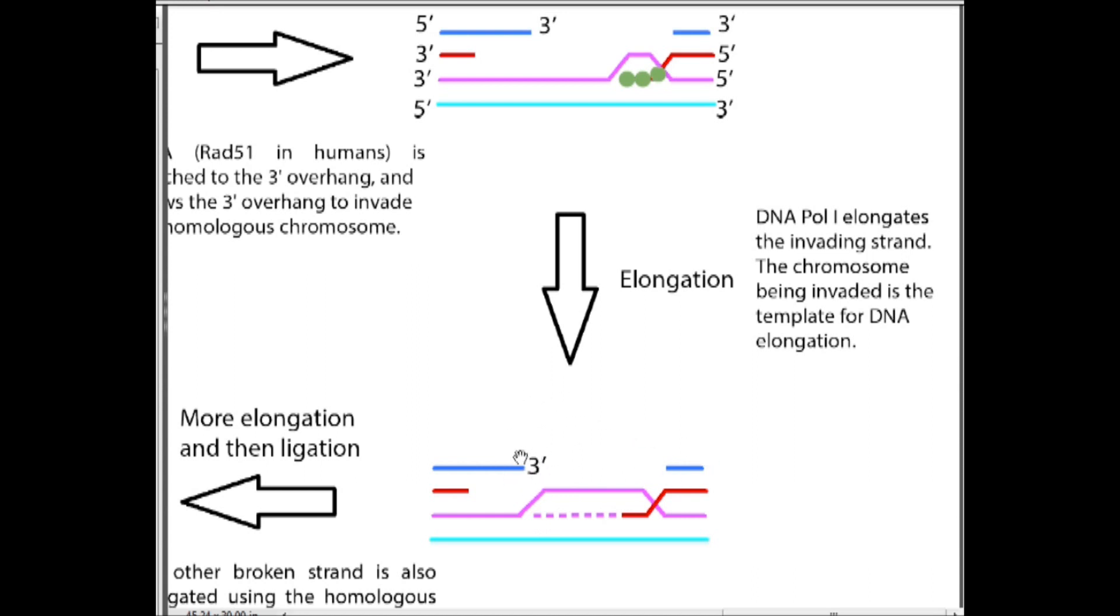I have this three prime end written up here because I forgot to mention in the other video: you can think of DNA and RNA synthesis as five prime to three prime because this three prime end is the one always being extended. If we drew an arrow in which the extension was going, it would be going this way.